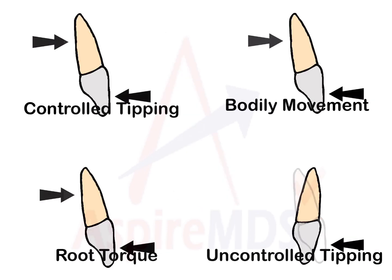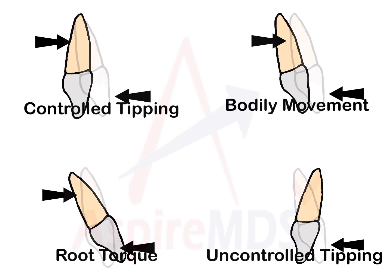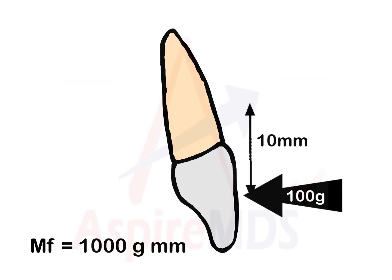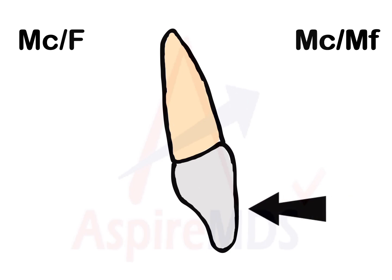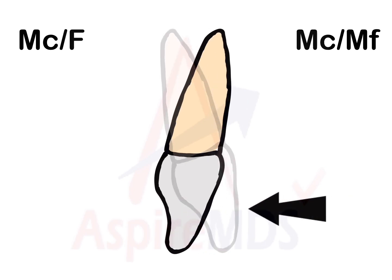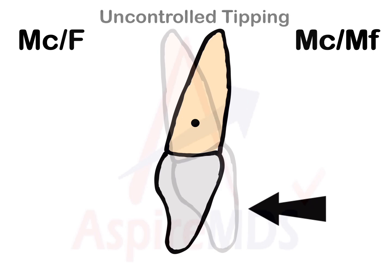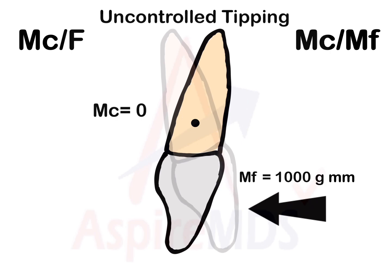Now let's see different types of tooth movements where we are applying 100 grams of force at 10 millimeters from the center of resistance. If we apply just a single force to the crown, the crown will move in the direction of the force and the root will move in the opposite direction. The center of rotation will be just apical to the center of resistance, and this type of movement is called uncontrolled or pure tipping. Here, the moment of force is 1000 gram-millimeters and as there is no couple, the moment of couple is 0. Hence, for uncontrolled tipping, the moment to force ratio is 0 and the moment of couple to moment of force ratio is also 0.